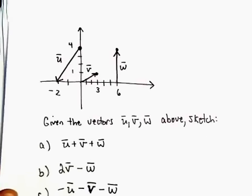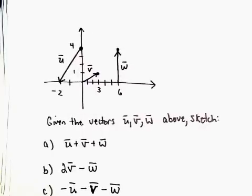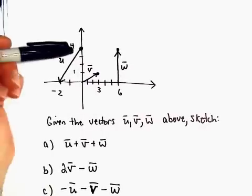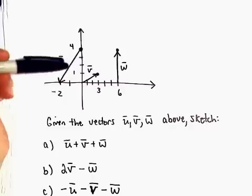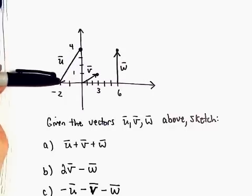All right, in this example, we're going to be given three different vectors here. So we've got vector u that starts at the point (0, 4) and stops at the point (-2, 0).